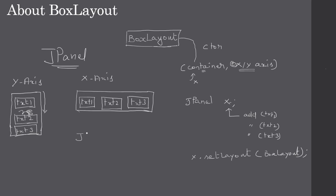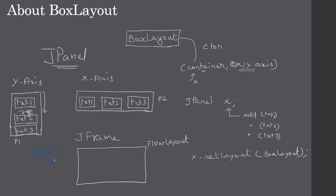Now let's say we have a JFrame or JDialog with a Flow Layout. Let's say it has Panel 1 (p1) and Panel 2 (p2) being added to it. We add p1 first, and since it's a Flow Layout, the box for p1 will appear on the left, and p2 will appear next to it on the right.